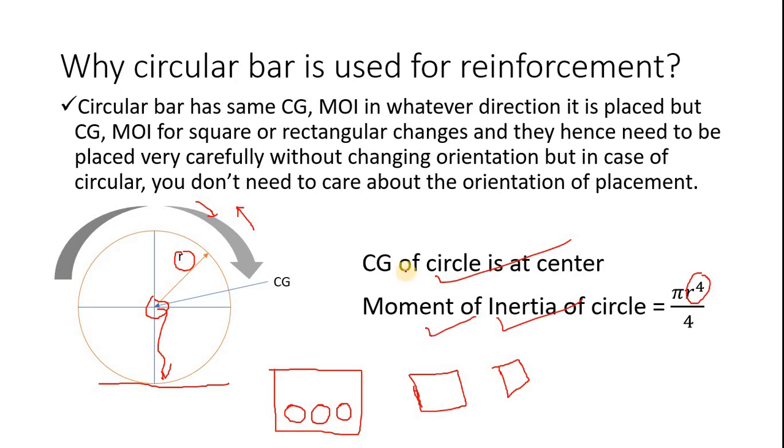So you need to be very careful while placing if other shapes are provided. This is the formwork of beam and these are the reinforcement. Now when you pour concrete and use vibrator, no matter how tightly you have tied it, due to using vibrator the orientation may shift slightly. So if it is circular it will have no effect, but if it is square or rectangular the orientation will be different.